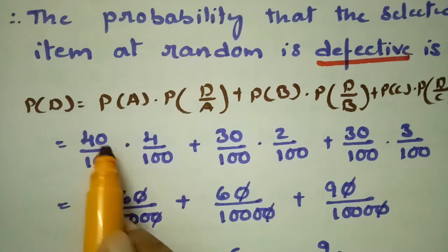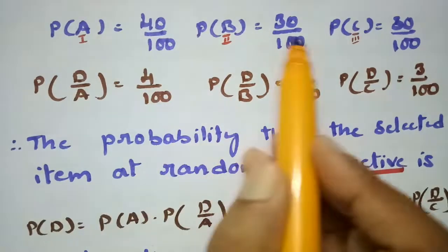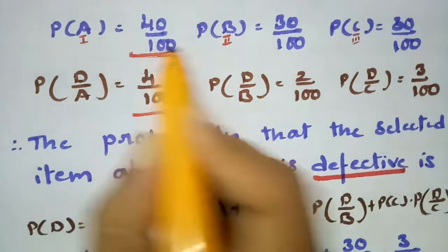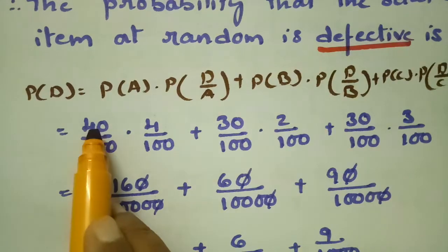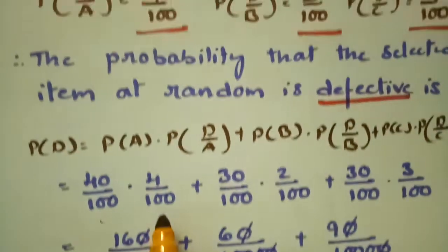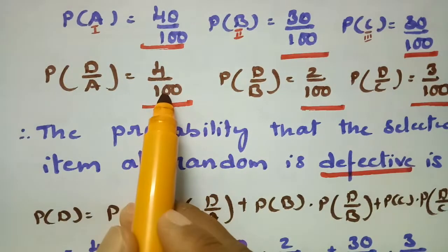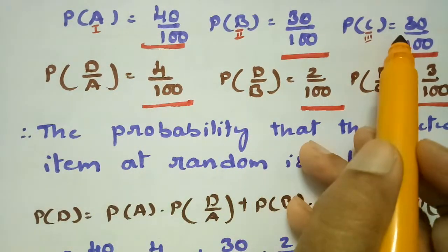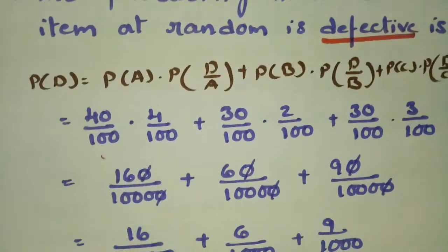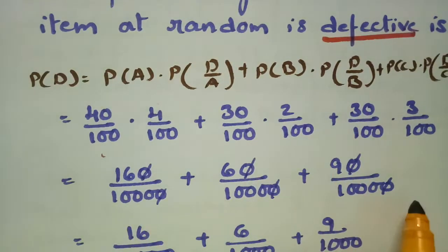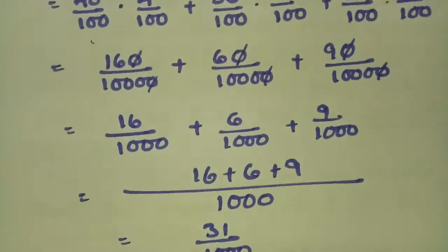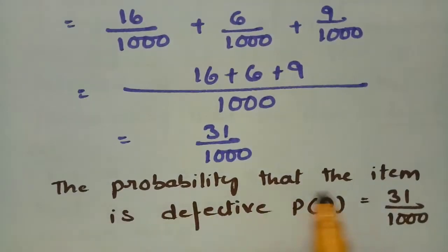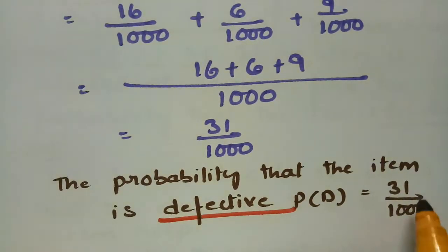Substituting all six values: P(D) = (40/100 × 4/100) + (30/100 × 2/100) + (30/100 × 3/100). Taking 1000 as the LCM, this gives 16 + 6 + 9 = 31/1000. Therefore, the probability that an item is defective when selected randomly is 31/1000.